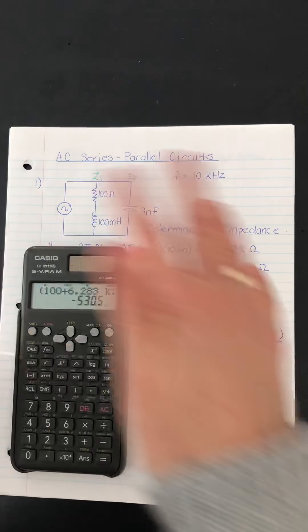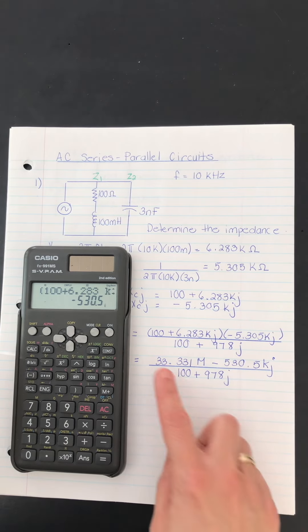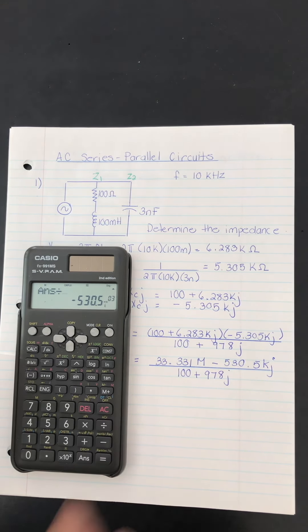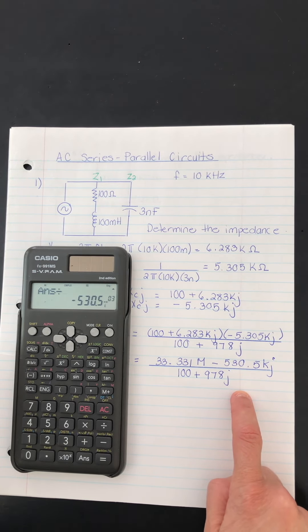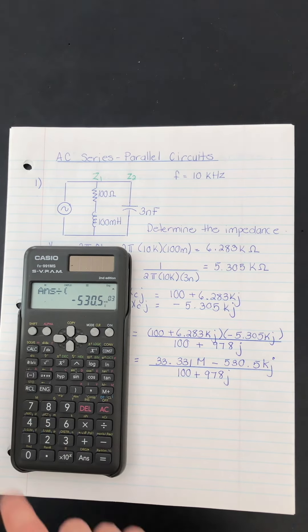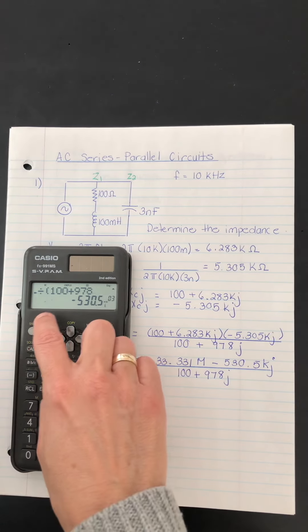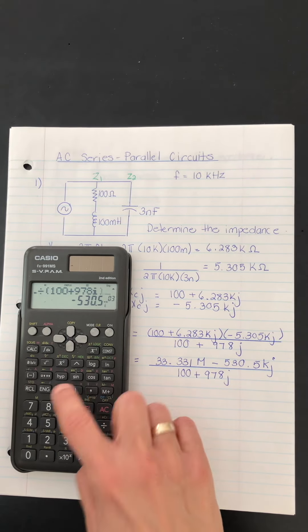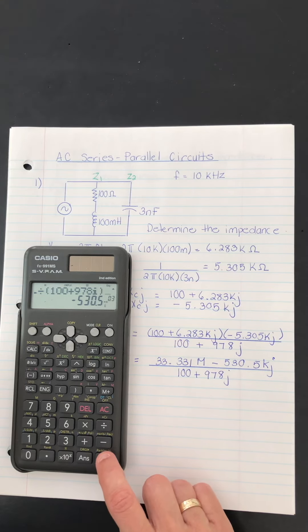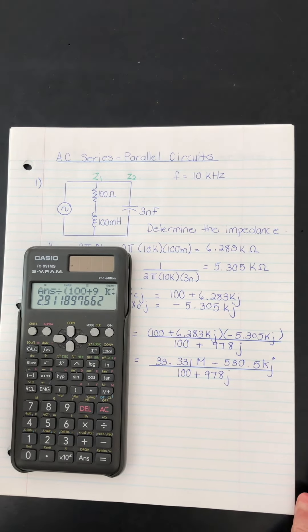So I've got the numerator done. It's in the calculator. So without clearing the calculator, I'm just going to now do divided by, and I'm going to put this complex number in. And 100 plus 978J. But again, I'll put a bracket. 100 plus 978. I. Close it and push equals.